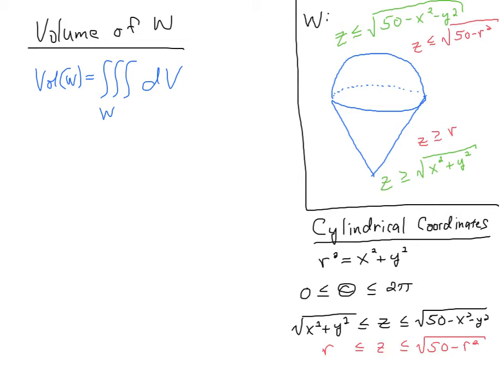So z is greater than r and less than the square root of 50 minus r squared. If I factor out the minus sign here, I get a plus sign there and that's an r squared.